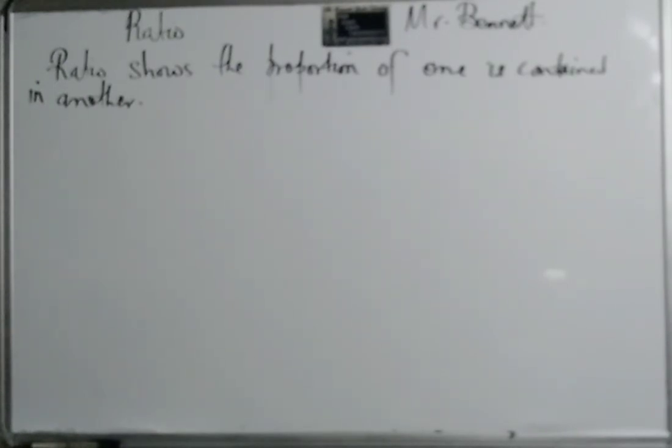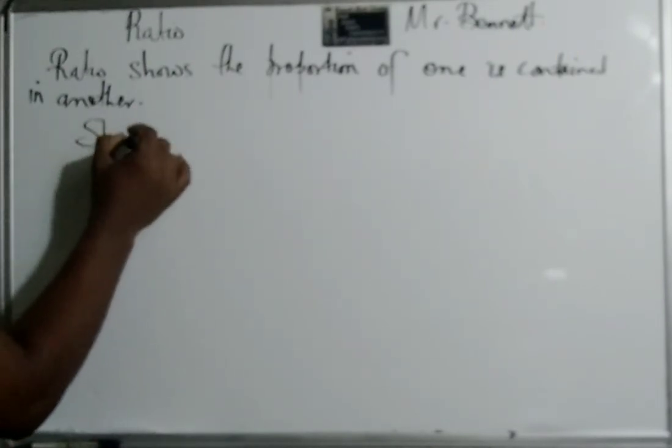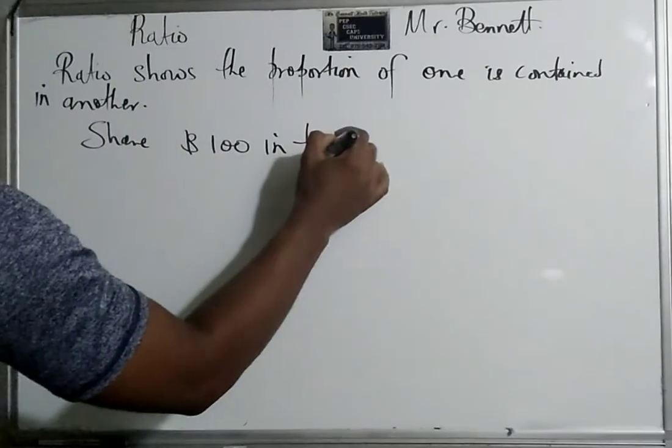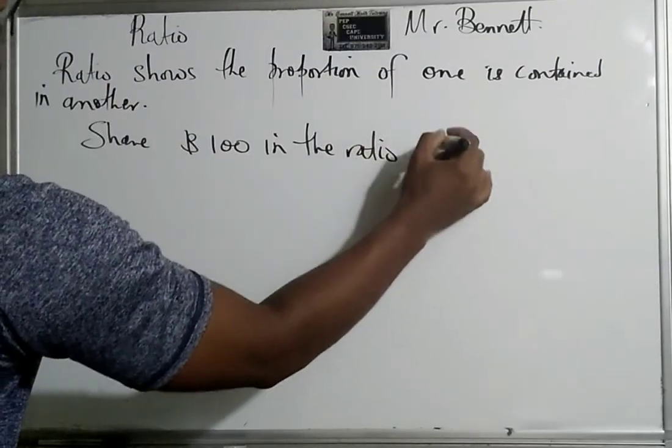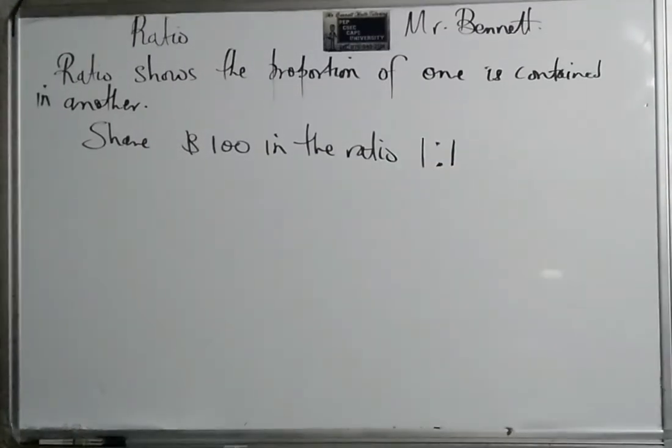So let us look at what is ratio. Sometimes I would like to think of ratios as fractions because it's expressed in such a way that it's almost like a fraction. For example, let's say your mom gave you a hundred dollars and she says share one hundred dollars in the ratio 1 to 1.